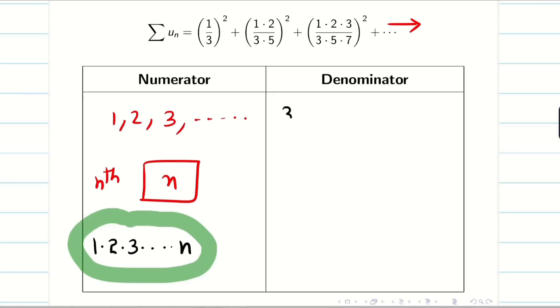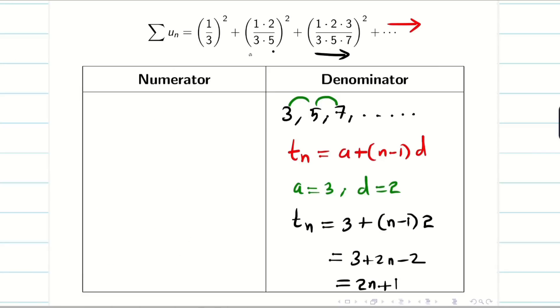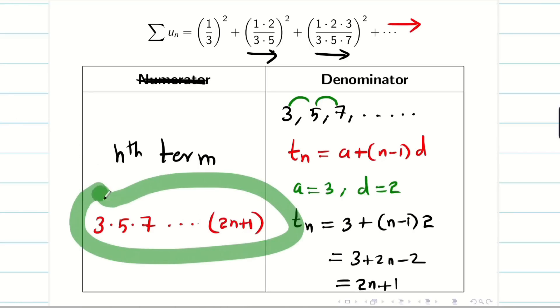Similarly, now we go for denominator. 3, 5, 7, it is increasing like this. So now we have to go for arithmetic progression. Tn equals a plus (n minus 1) times d, where a is 3, d is 2. D is the difference between any two consecutive terms. Now the nth term is 3 plus (n minus 1) times 2. That is 3 plus 2n minus 2. We will be getting 2n plus 1. Since my denominator term is also increasing, to write the nth term, we have to write 3, 5, 7, it goes up to n. My nth term is 2n plus 1.